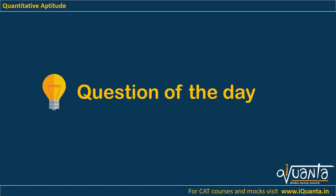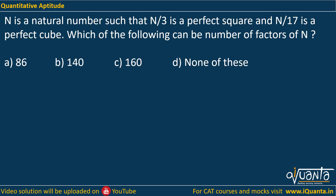Hello everyone. Today's question is based upon numbers. We will be solving a question related to factors of a given number. The question is: n is a natural number such that n divided by 3 is a perfect square and n divided by 17 is a perfect cube. Which of the following can be the number of factors of n?